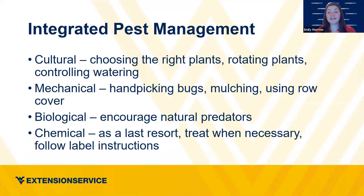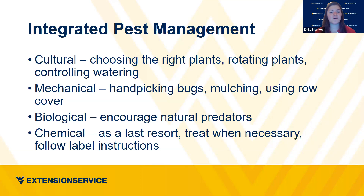So what are each of those control measures, and we usually try to do them in this order. Cultural happens before you even plant or in the early stages — choosing the right plants, choosing varieties that have some disease resistance. You're rotating plants each season so you're not putting tomatoes in the same spot every year, and not putting peppers where your tomatoes were because they're in the same plant family. Throughout the growing season you'll use mechanical measures: handpicking bugs, mulching around the base of plants to keep soil-borne diseases at bay, or using row cover to keep pests from taking hold.